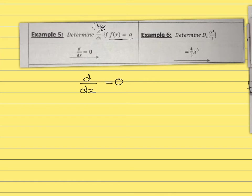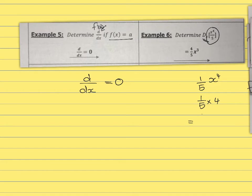Here you've got to find the derivative for 1 over 5 times x to the power 4. Multiply 1 over 5 by 4, which gives 4 over 5. The exponent becomes 4 minus 1, giving x to the power 3. So dx equals 4 over 5 times x to the power 3.